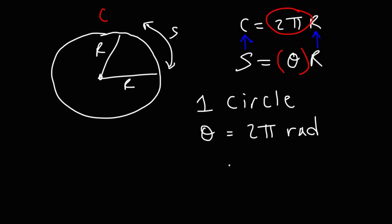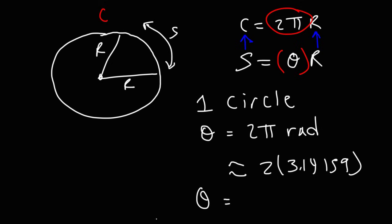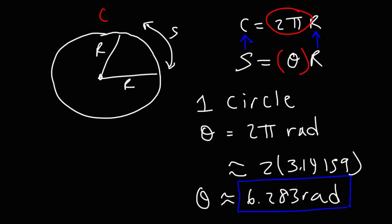Now, we know that pi is approximately 3.14 — you could use 3.14159 if you want, but 3.14 will work. If we multiply that by 2, we get that the angle measure is approximately 6.283 radians. So this is how many radians there are in a complete circle: there are 6.283 radians in one circle.